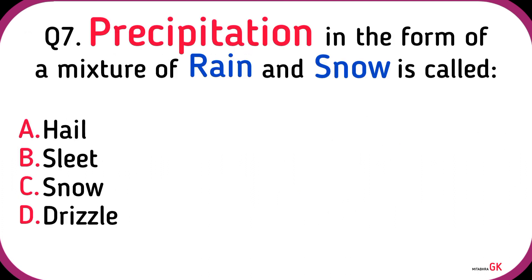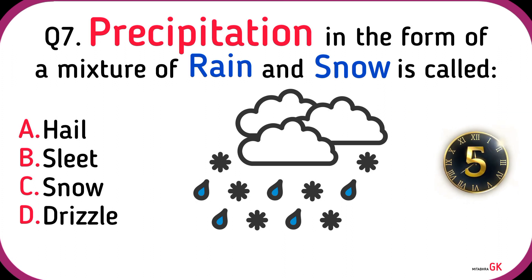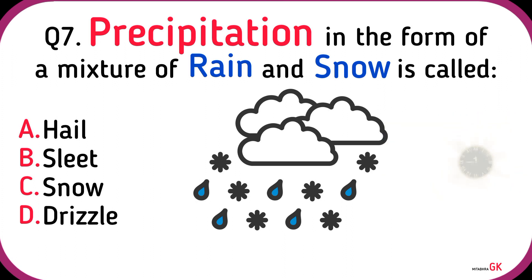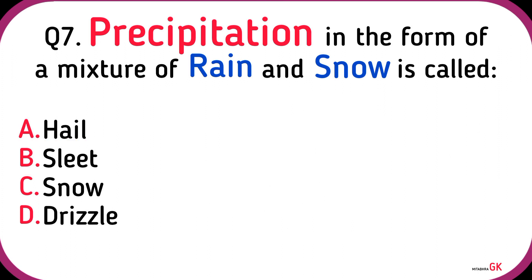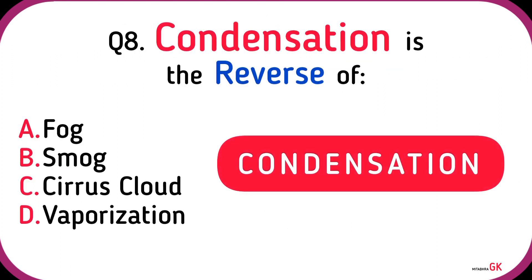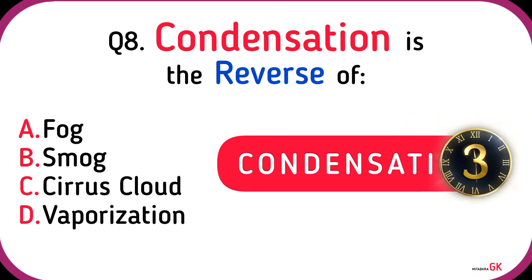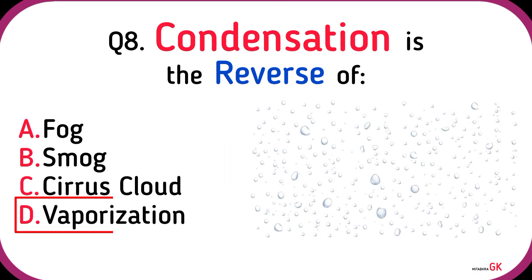Precipitation in the form of a mixture of rain and snow is called Sleet. Condensation is the reverse of Vaporization.